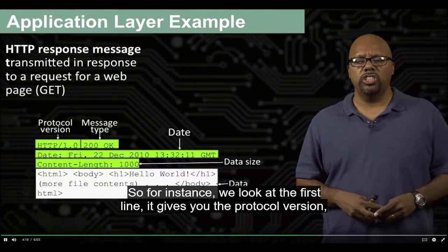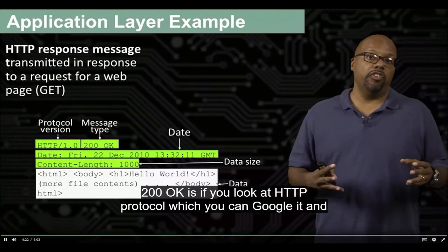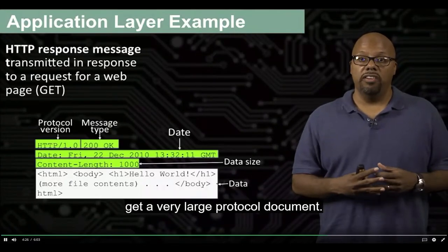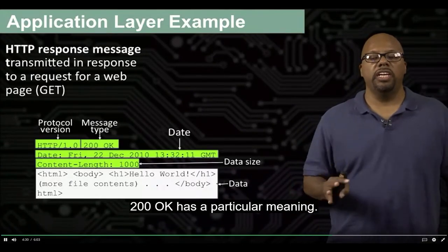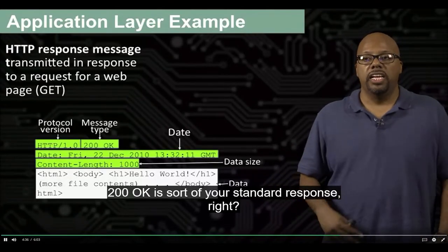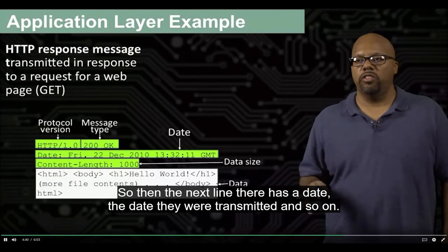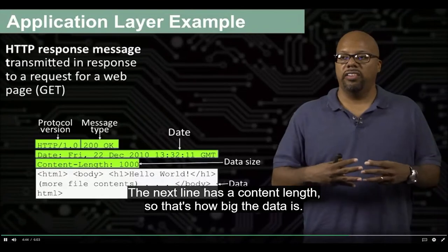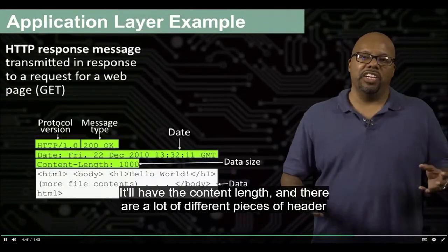Looking at the first line, there's the protocol version and also the message type. '200 OK' — if you look at the HTTP protocol, which you can Google to find a large protocol document — 200 OK has a particular meaning. Every response message has a particular code, and 200 OK is your standard response. The next line has the date it was transmitted, and the next line has a content length showing how big the data is.